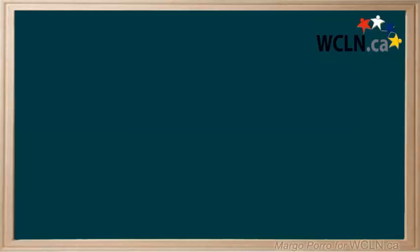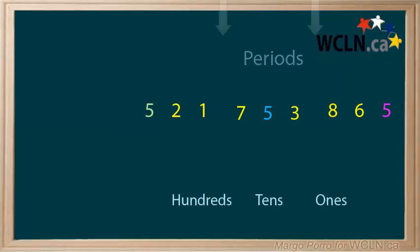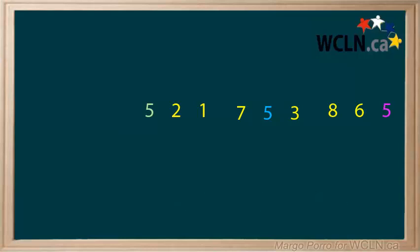Whole number digits are arranged in groups of three called periods. Each period always has ones, tens, and hundreds. And to make it easier to read numbers, a space is used between each group of three. The first group of three is called the units period. After the hundreds, you start another period, or group of three, that you are probably familiar with — the thousands period.